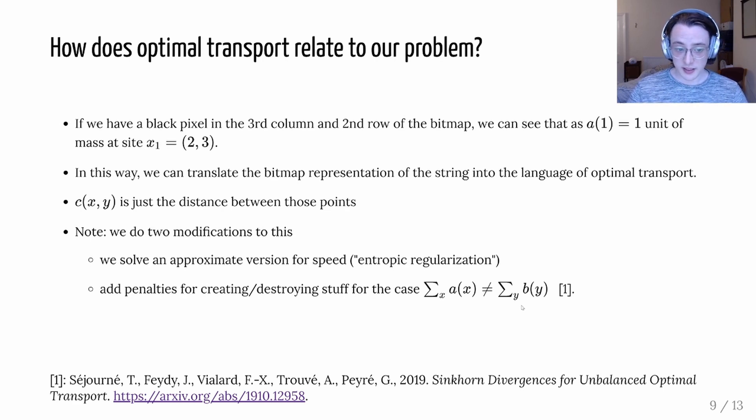We're actually going to have to do two modifications to this. First we're going to solve an approximate version of this problem so we can do it faster. This is a technique called entropic regularization. And the other thing we're going to do is we're going to allow the creation or destruction of mass but with a penalty so that we can treat the case when our starting and ending configuration don't actually have the same amount of mass. So for example what if one string is longer or has bigger letters so it has more black pixels than the other string we're going to have to create or destroy mass to get between them.